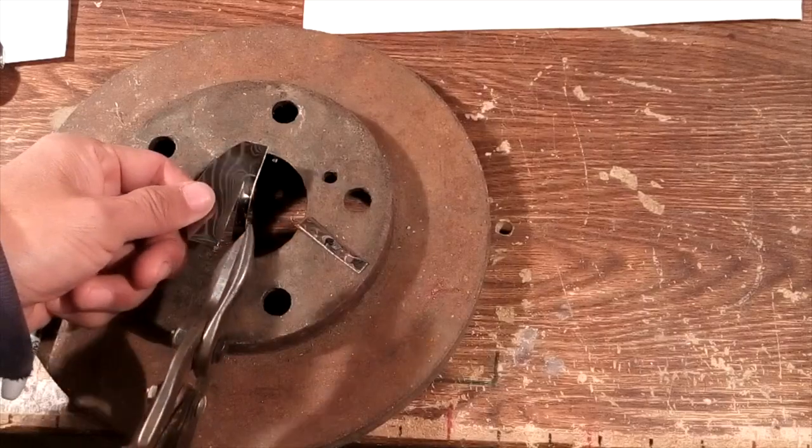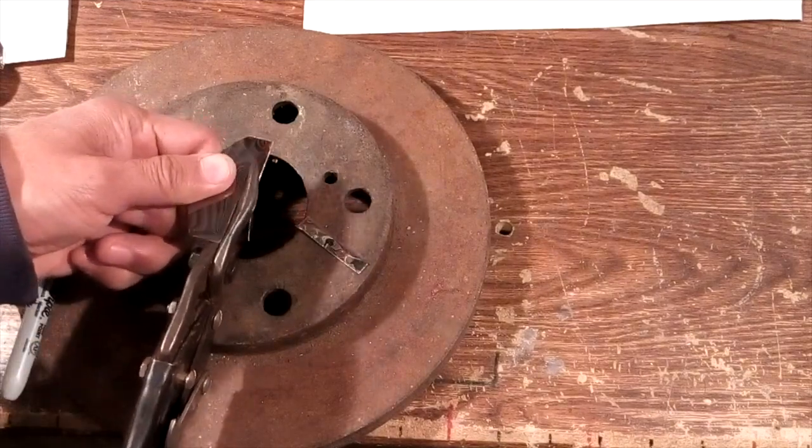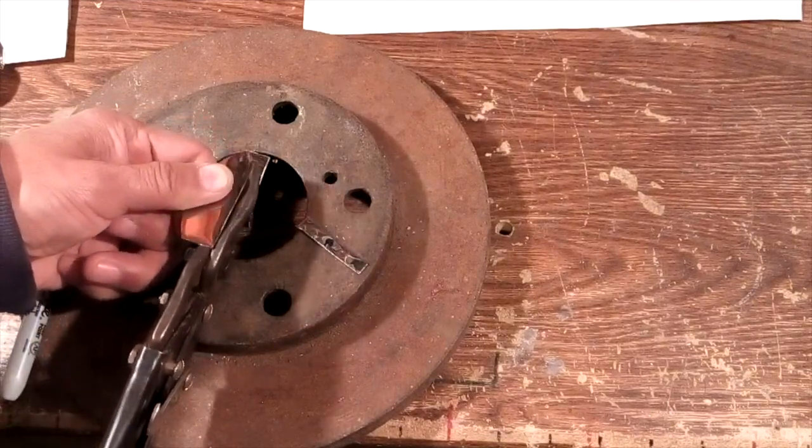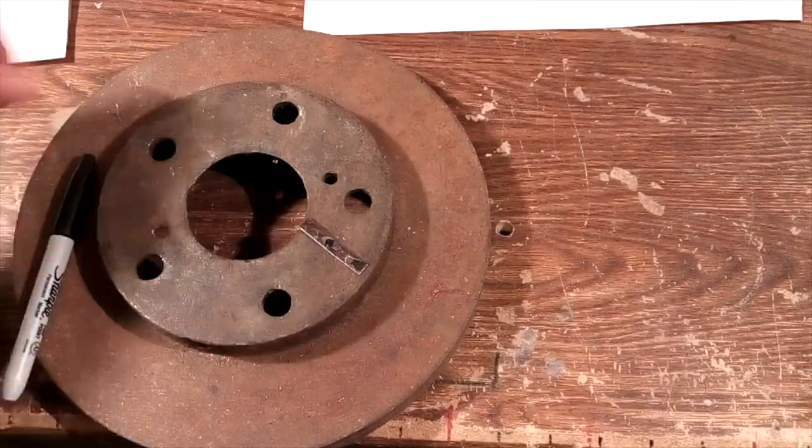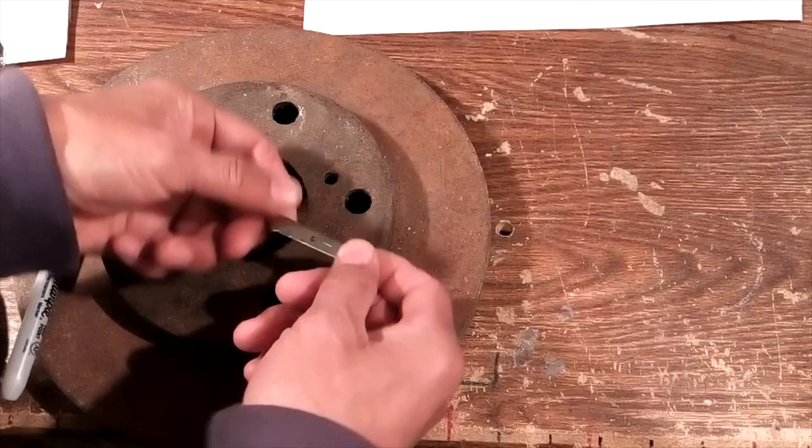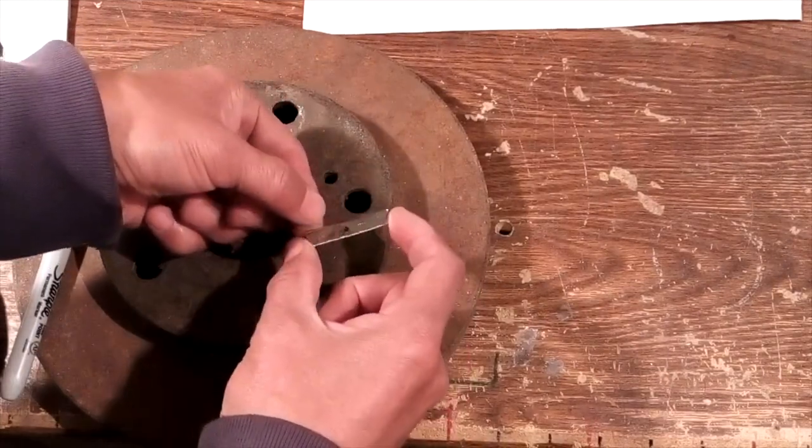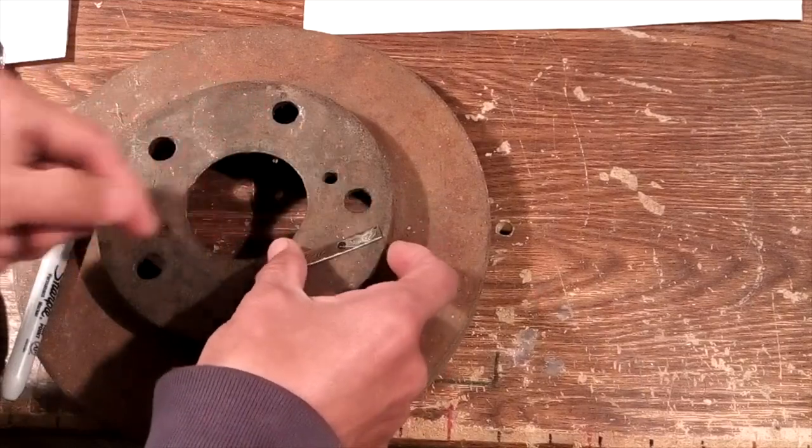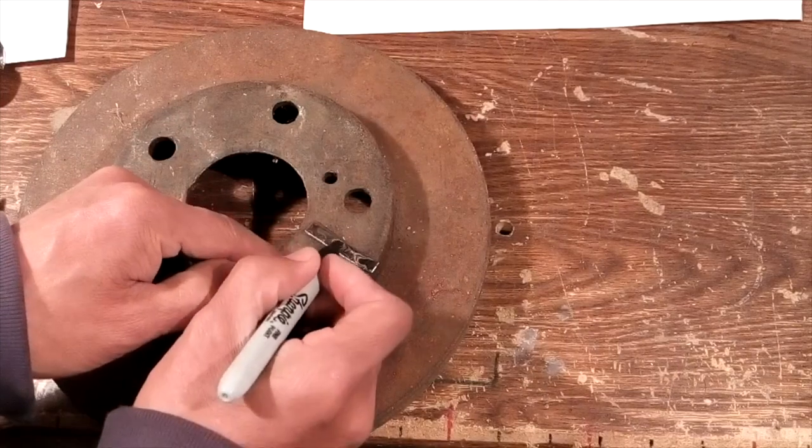For the spinner blades, you need to cut a rectangle piece like this, about a quarter inch wide, one and a half inch long.